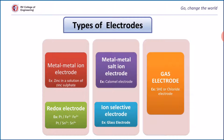Ion selective electrode: electrodes which have the ability to respond to specific ions by neglecting other ions in a solution. Gas electrode: an electrode system in which one of the electrode materials is a gas bubbled over an inert metal which is in contact with a solution containing ions — for example, the standard hydrogen electrode or chlorine electrode.